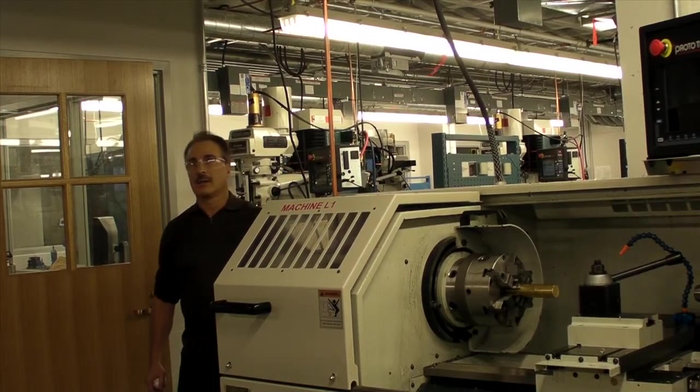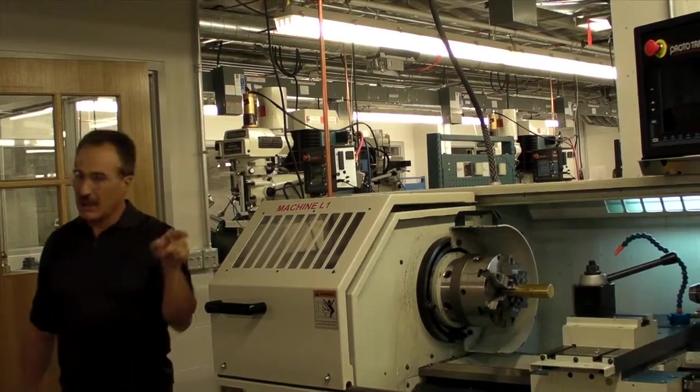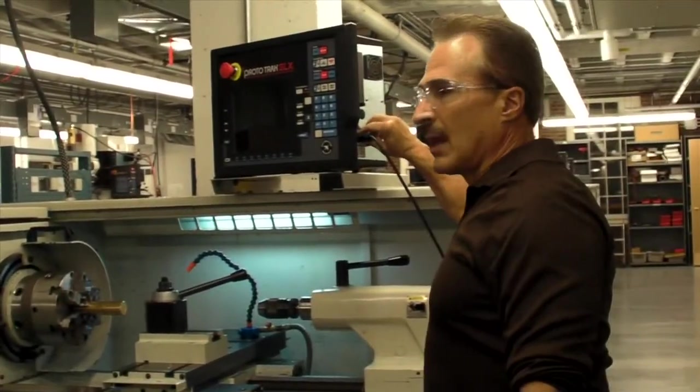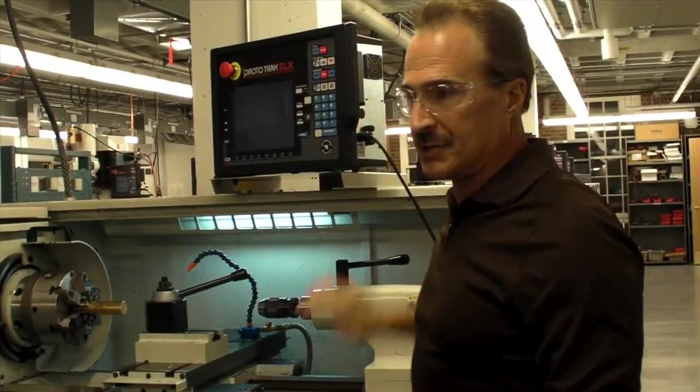There's a switch here that'll bring in 110 power that activates the control and turns on the lights. And then a switch on the control that activates the CNC pendant.